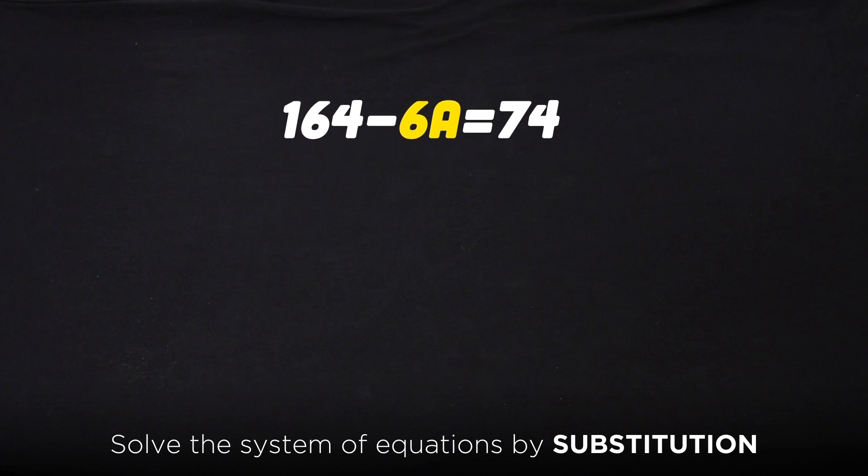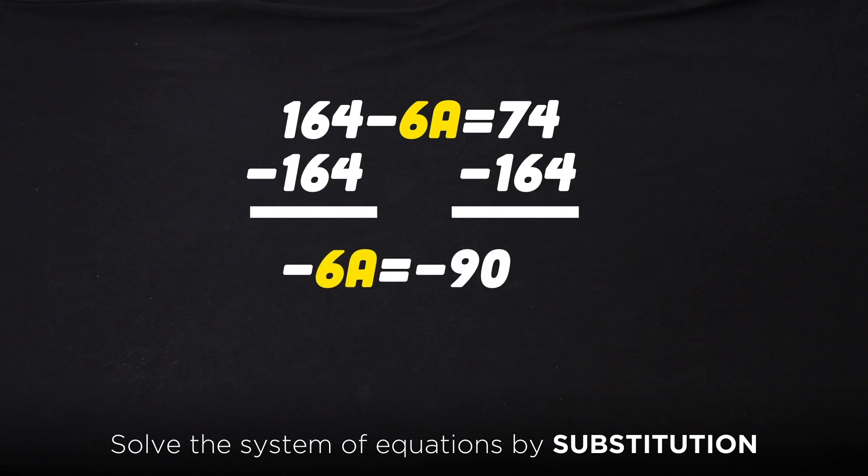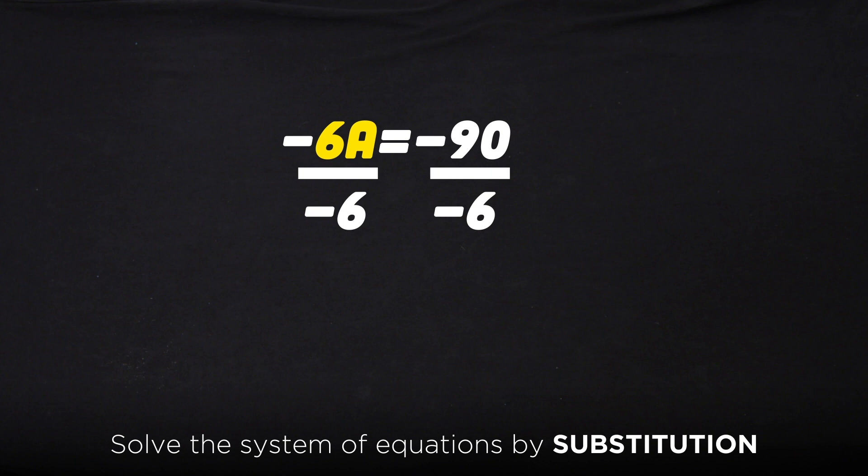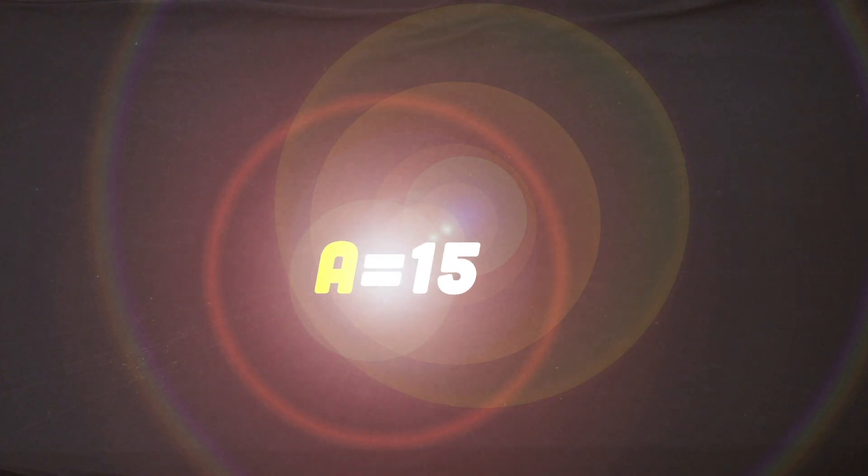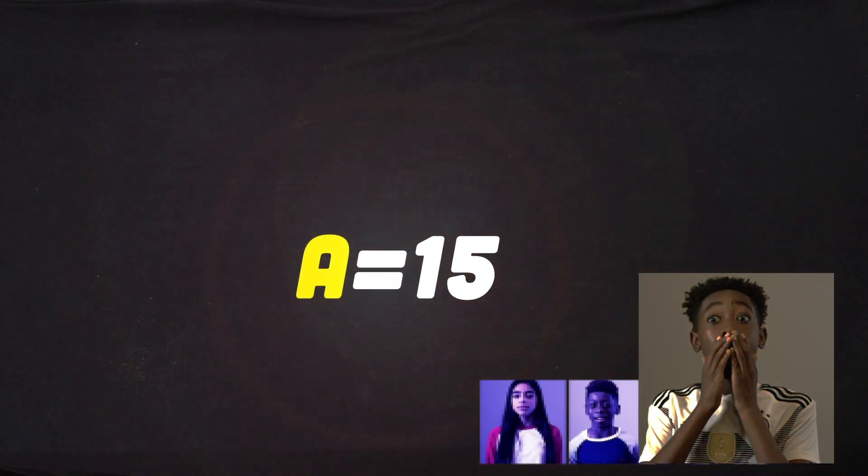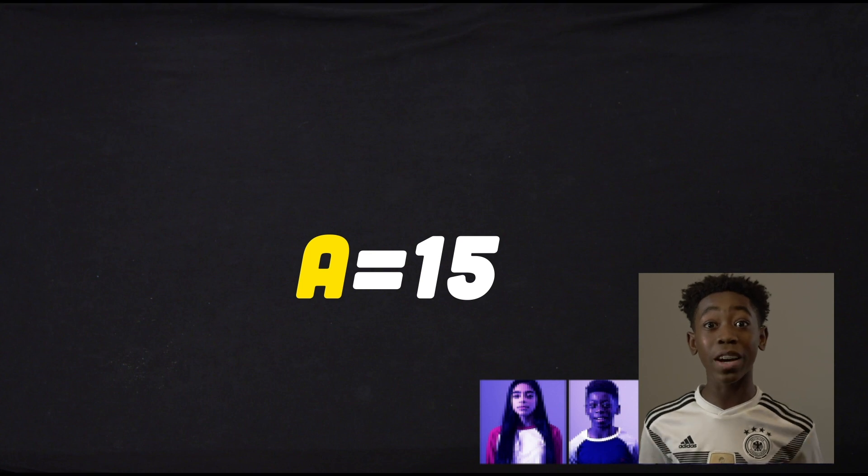Now we have 164 - 6A = 74. We will then subtract 164 on both sides, leaving us with -6A = -90. We will then divide negative 6 on both sides, leaving us with A = 15. Oh my gosh! I finally get how Algefort is 15 V-Bucks!